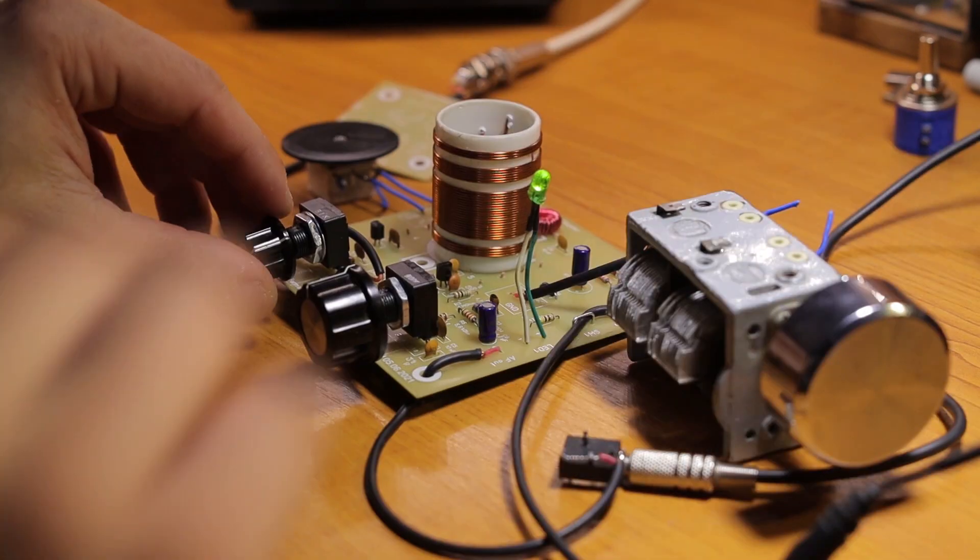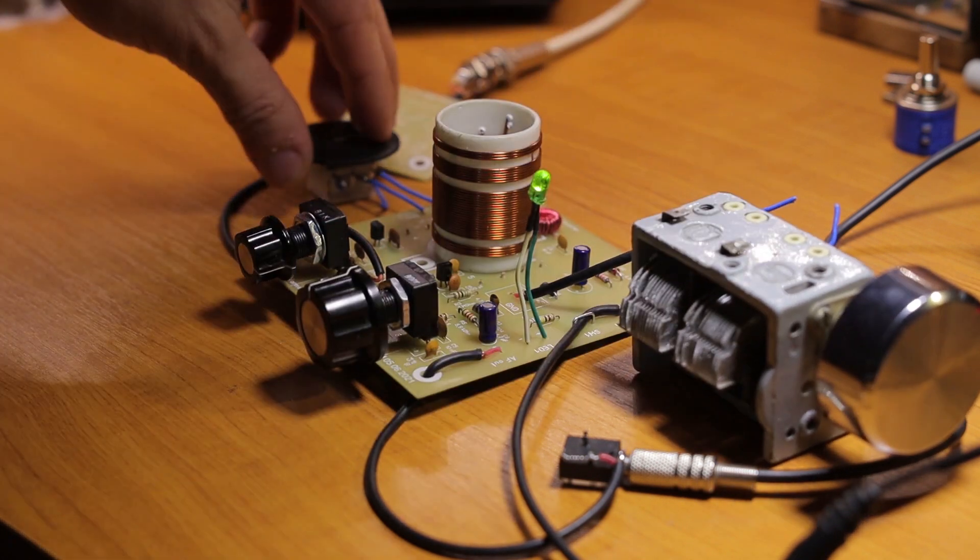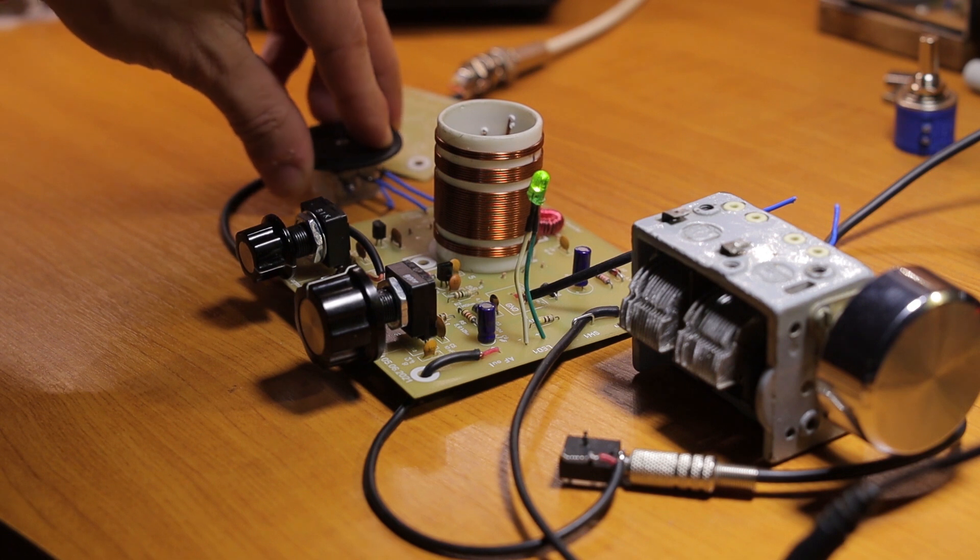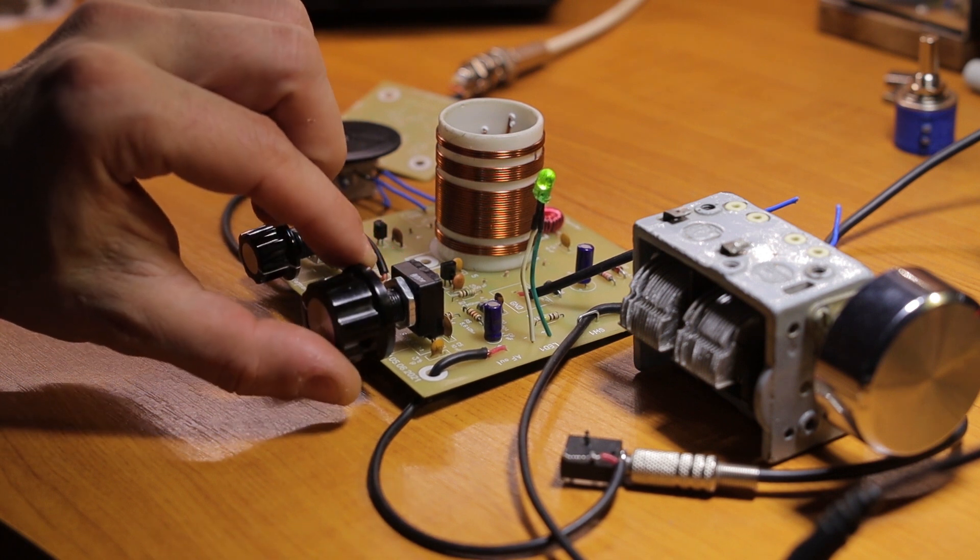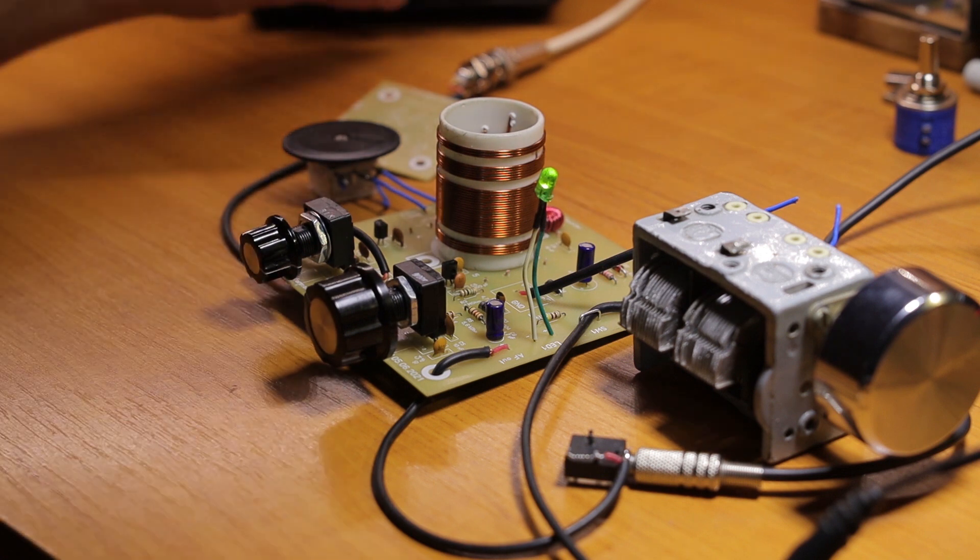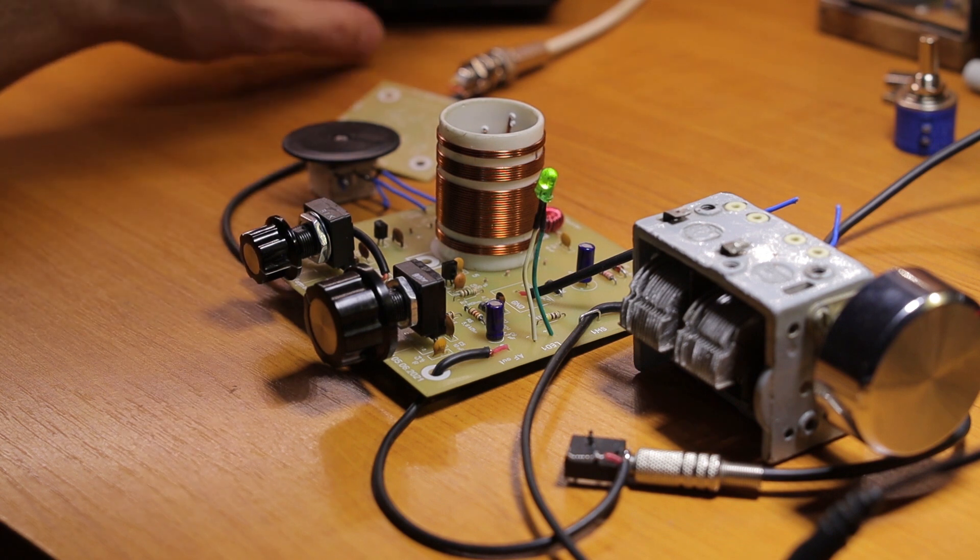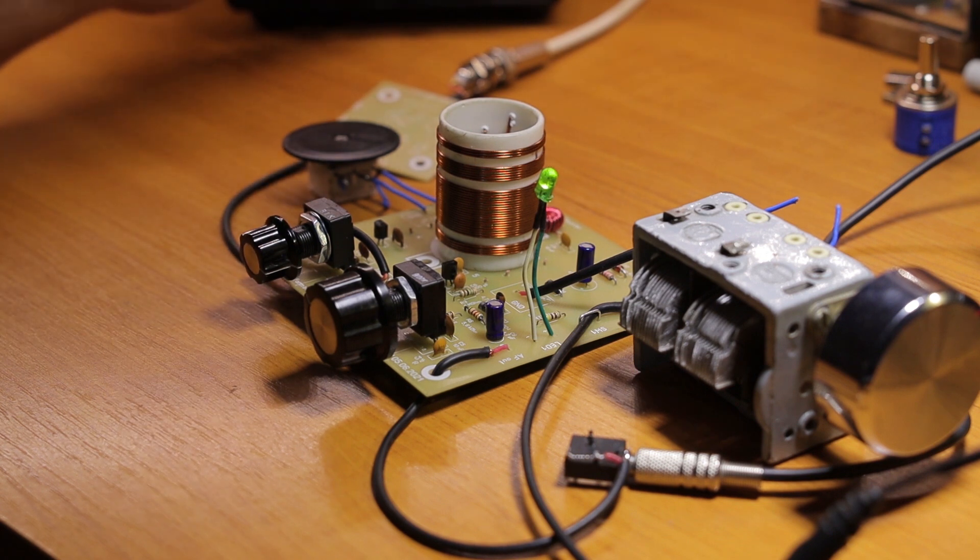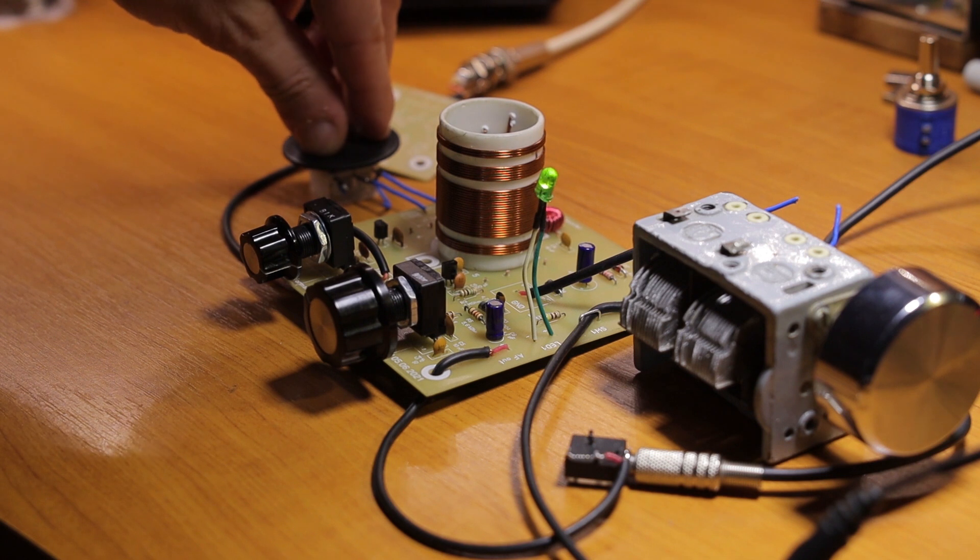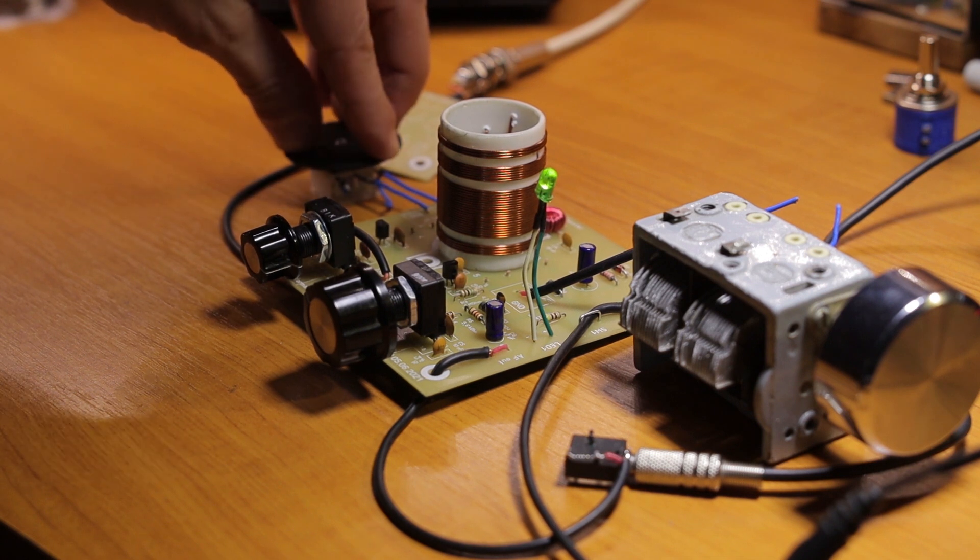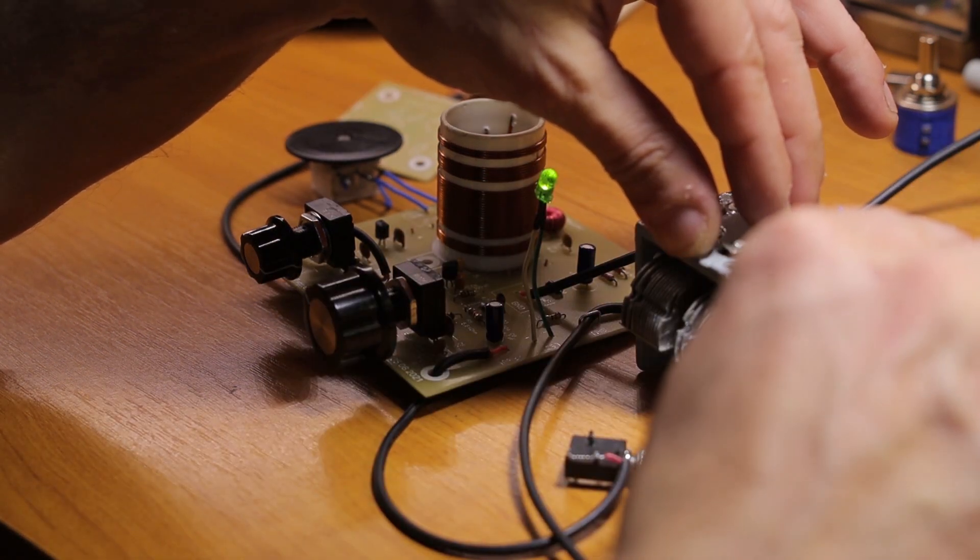We're back on the 40 meters band. I still have to get used to playing around with the controls. I'm used with the Sputnik because usually I set the regen control in one position and then I never touch it. It's nearly like a direct conversion receiver where I just play around with the tuning, RF attenuator and volume control. This one I seem to need to change the regeneration control most of the time.